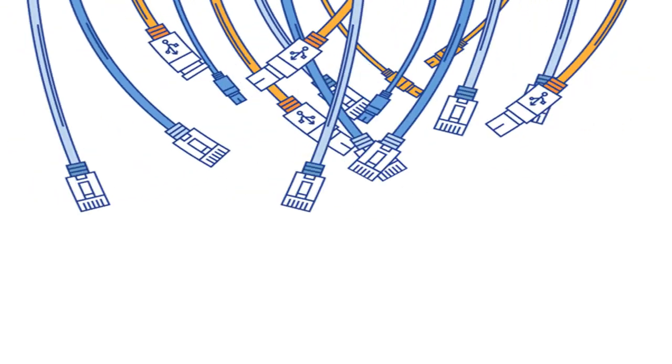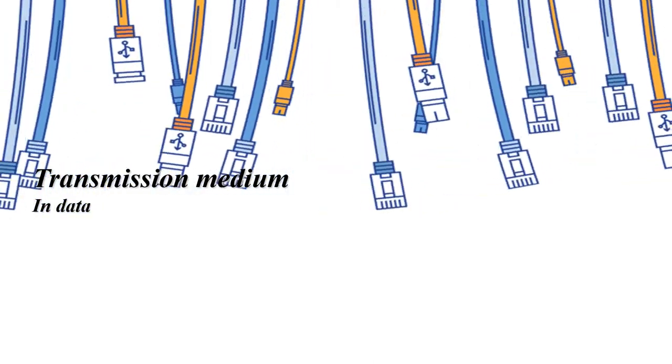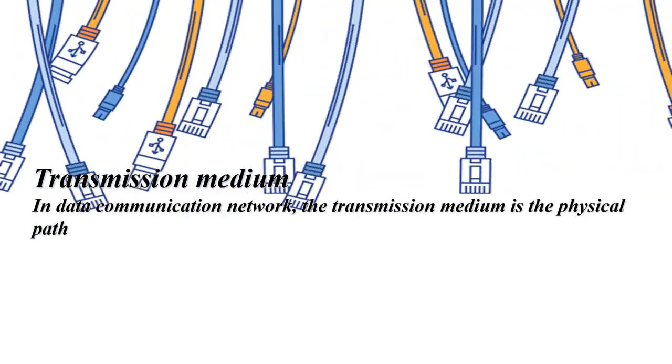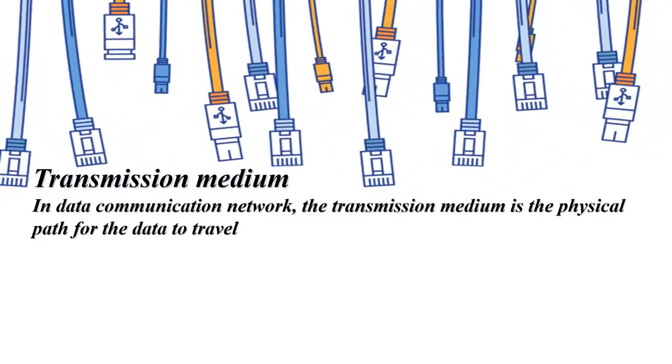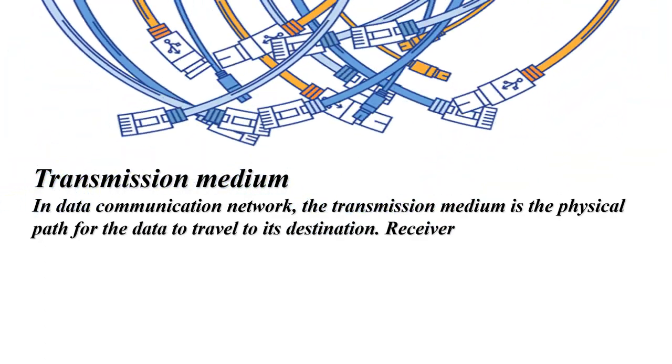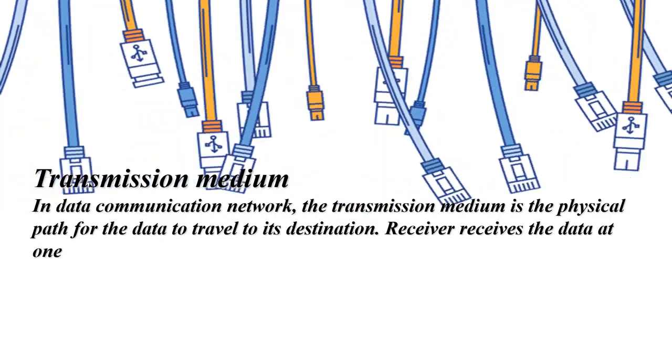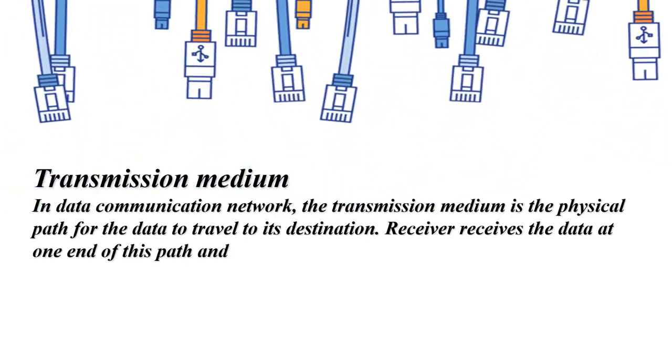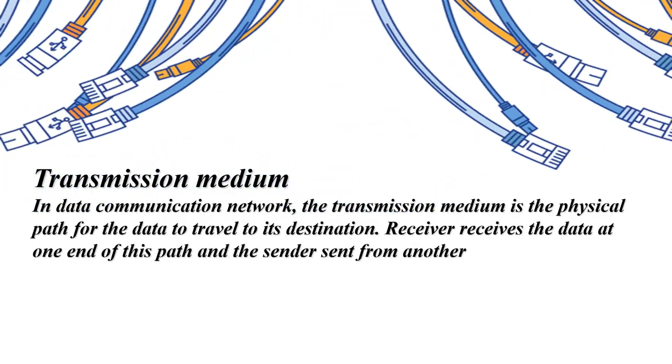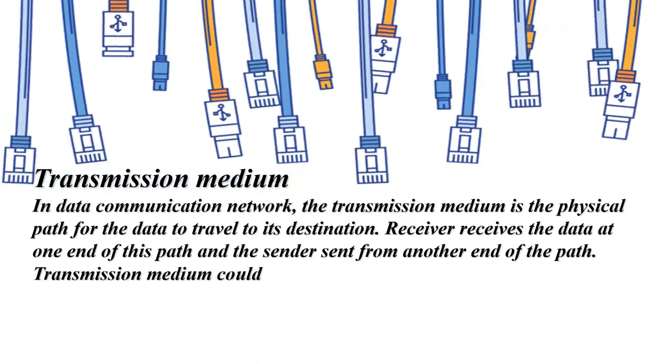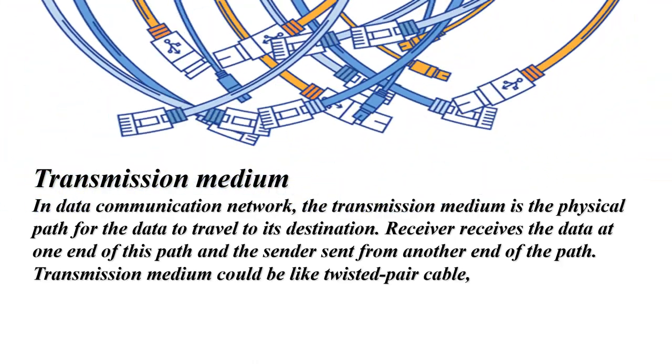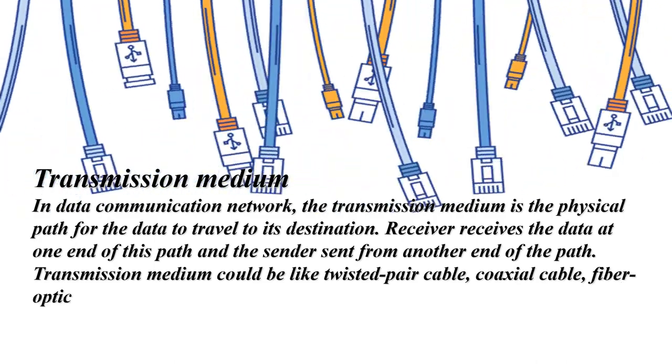In a data communication network, the transmission medium is the physical path for the data to travel to its destination. The receiver receives the data at one end of this path, and the sender sends from another end. Transmission medium could be twisted pair cable, coaxial cable, fiber optic cable, etc.